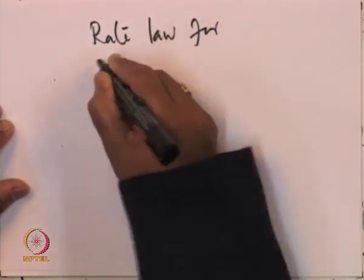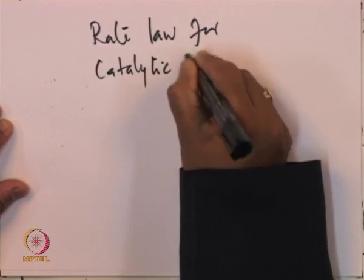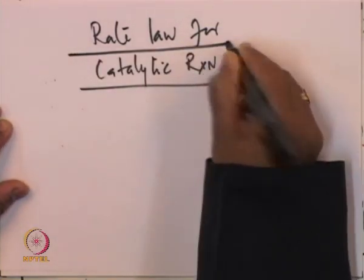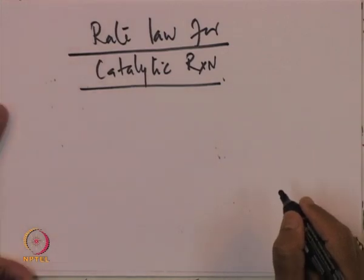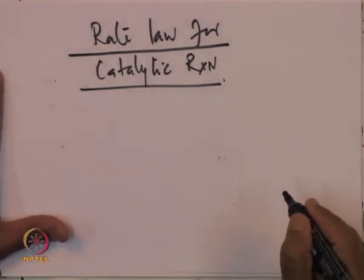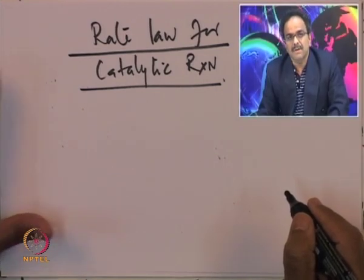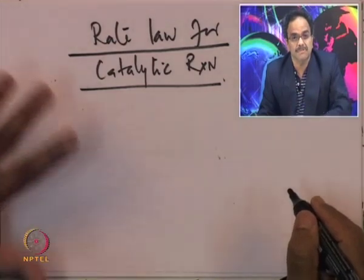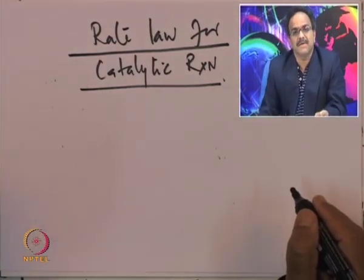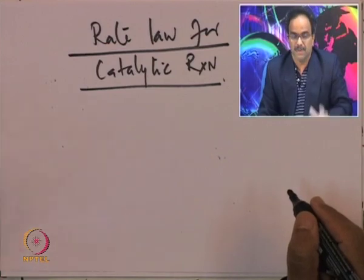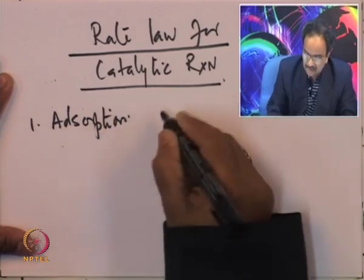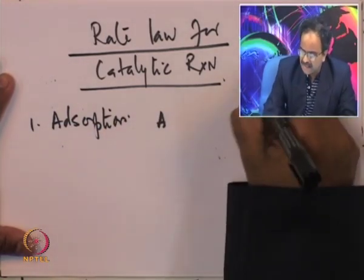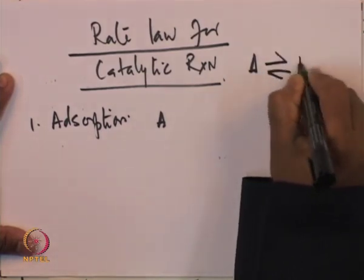Rate law for catalytic reaction: when I say catalytic reaction, it is the solid catalyst reaction where adsorption, chemical reaction, and desorption take place. In a normal homogeneous reaction, there is no adsorption and no desorption. Now I want to combine the effect of these three steps and come up with the rate equation. Consider the overall reaction A reversible with B.